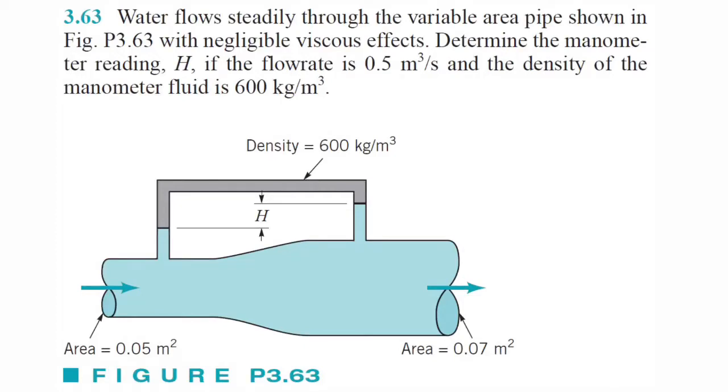Alright, so what's going on? We got another Bernoulli equation problem. I need two more of these, so this one and one more. I forgot to print these out the other day. So the problem reads: water flows steadily through the variable area pipe shown with negligible viscous effects. We got to determine the manometer reading H if the flow rate is 0.5 and the density of the manometer fluid is 600. So let's go ahead and get started.